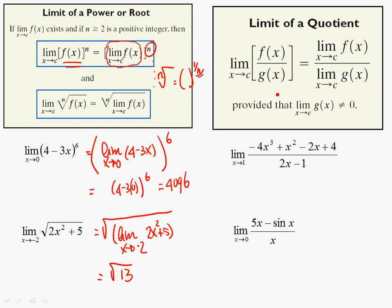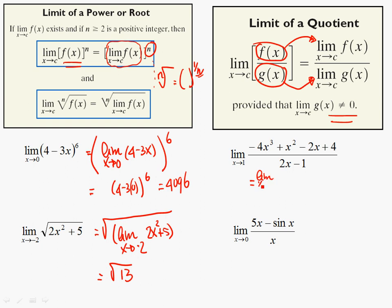The limit of a quotient: that's a polynomial and that's a polynomial, right? And you can find the limit of a polynomial just by plugging things in. We need to make sure that g of x is not worth zero. In this case that's not a problem at all, because if you plug in a one here, you get two minus one, which is one. So this one is going to work without any trouble whatsoever.